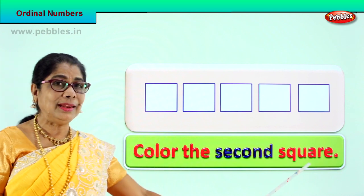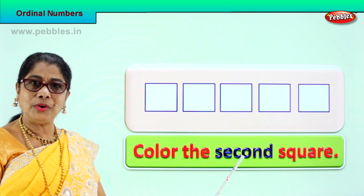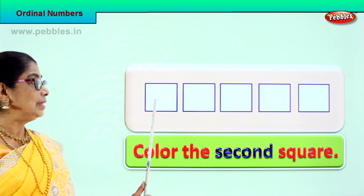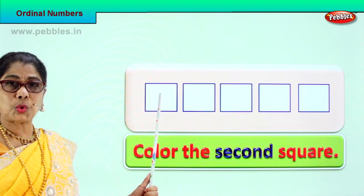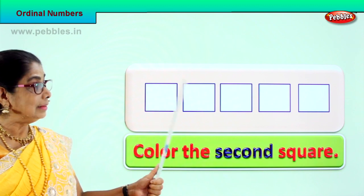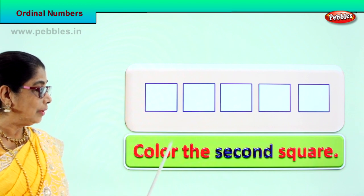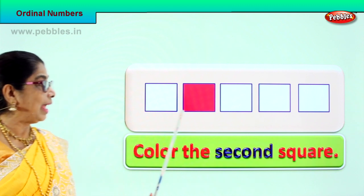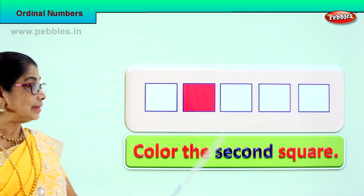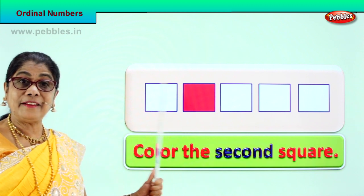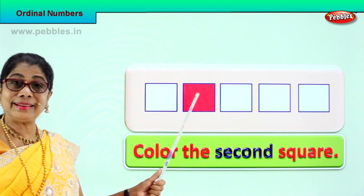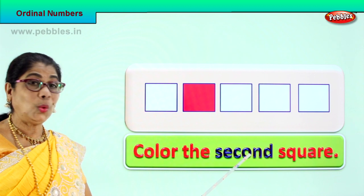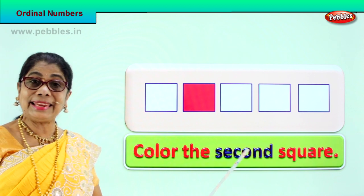So we are learning to read and learning the spelling of the ordinal number. What is asked? Color. This is the first square, this is the second square. We are asked to color the second square. We have colored the second square red. First. Second. Spell second: S-E-C-O-N-D. Second.